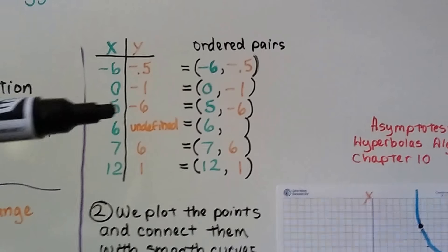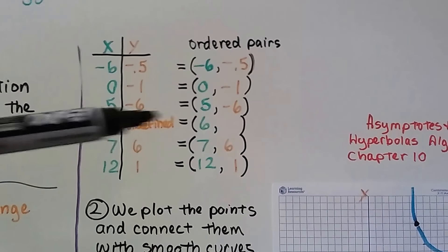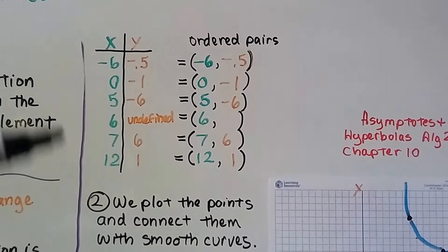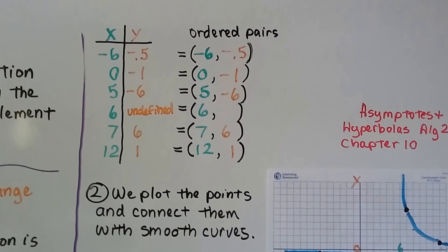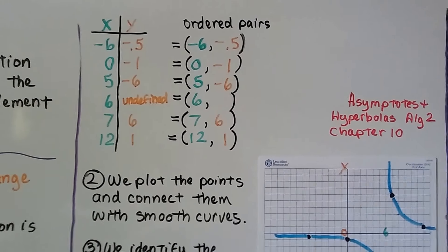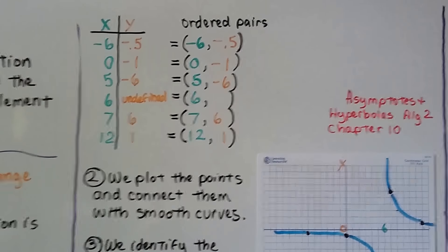These are each of our ordered pairs and we're not going to be able to use this one really because we don't have a y value. It was undefined. And you're going to learn about asymptotes and hyperbolas in Algebra 2, Chapter 10.